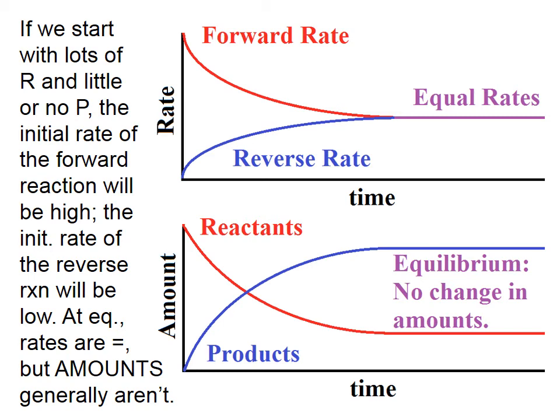Here's another way of looking at it. If we start with lots of reactant and little or no product, the initial rate of the forward reaction will be high, and the initial rate of the reverse reaction will be low. You can see in the upper graph that the rate of the forward reaction initially is very high, and the initial rate of the reverse reaction is fairly low — this is for a case when we start with lots of reactant and almost no product. As time goes on, the rate of the forward reaction is going to decrease as we form more and more products, and the rate of the reverse reaction is going to increase as we form more and more reactants.